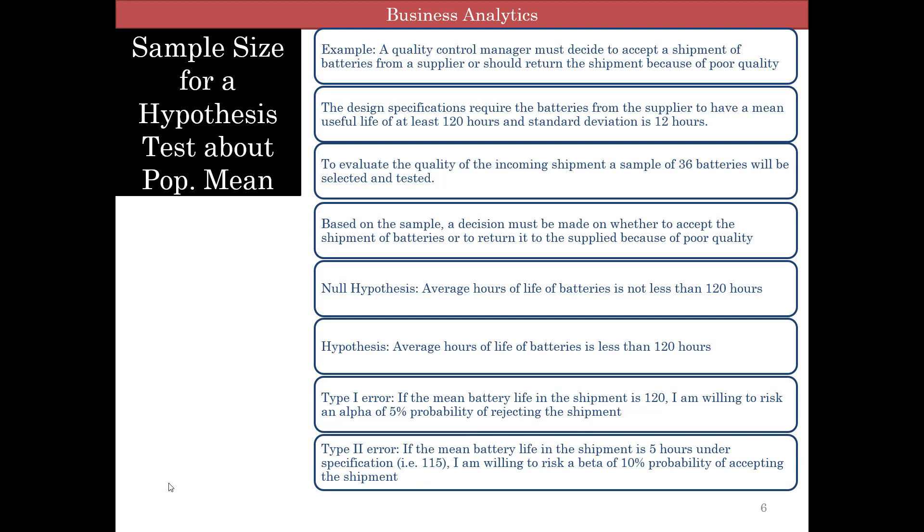The manager also says that if the mean battery life in the shipment is five hours under specification, that is 115, they're willing to risk a type 2 error of 10% probability of accepting the shipment. Where did I get this 115? This is a number based on judgment of the manager.